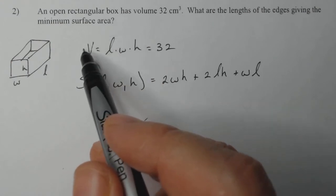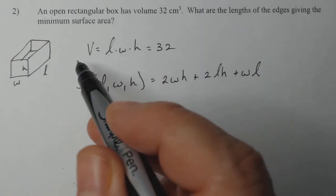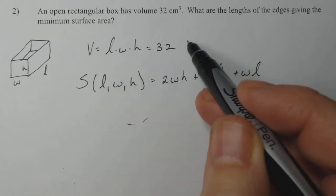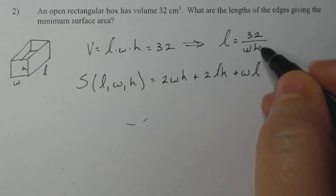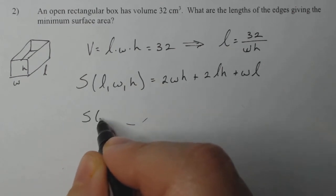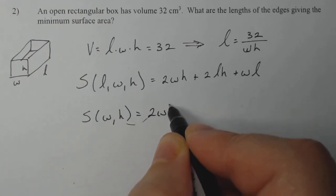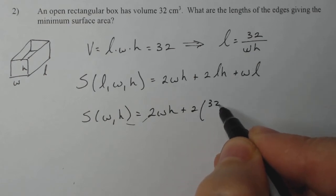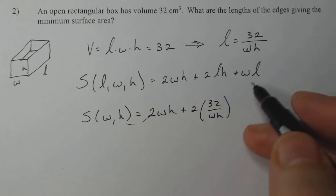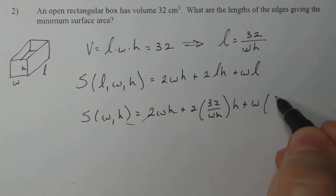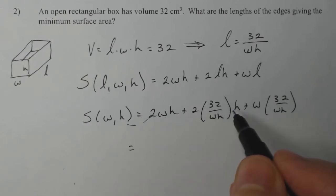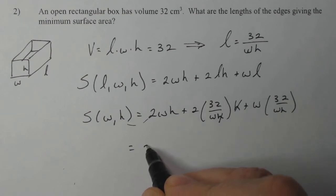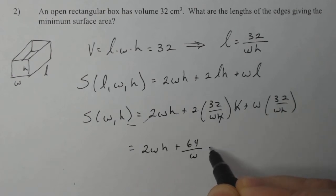Now to eliminate one of these variables, I actually utilize this. This is a type of constraint, but it's not the same type we would use with Lagrange multipliers because it's in terms of three variables. So this implies that length is equal to 32 divided by WH. I'm going to use that to get myself a function of two variables, W and H. So this is going to be 2WH plus 2 times 32 over WH times H. The H's cancel here. I get 2WH plus 64 over W plus 32 over H.